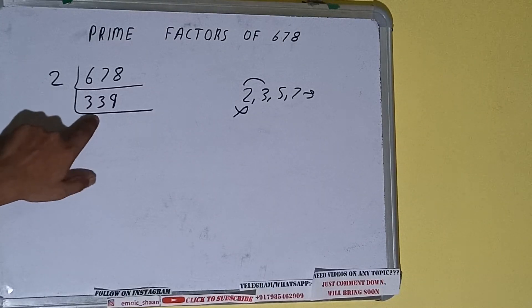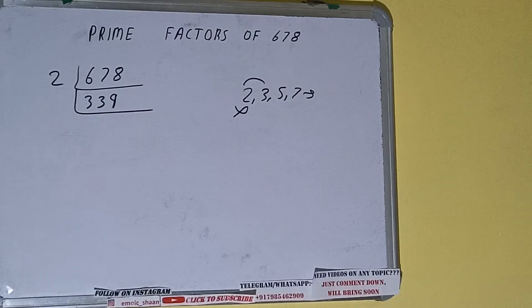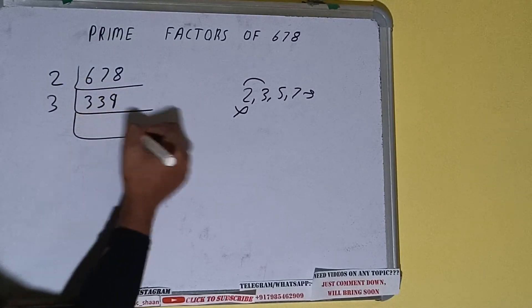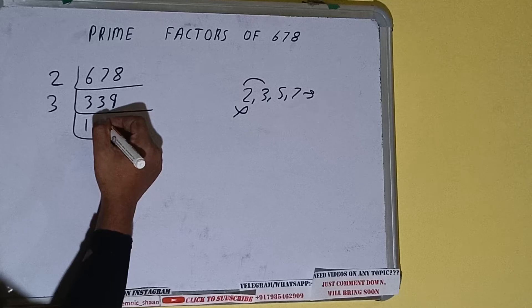Let's check: 3 goes into 3, 3 goes into 3, 3 goes into 9. It is divisible by 3, so divide it and we'll be having 113.